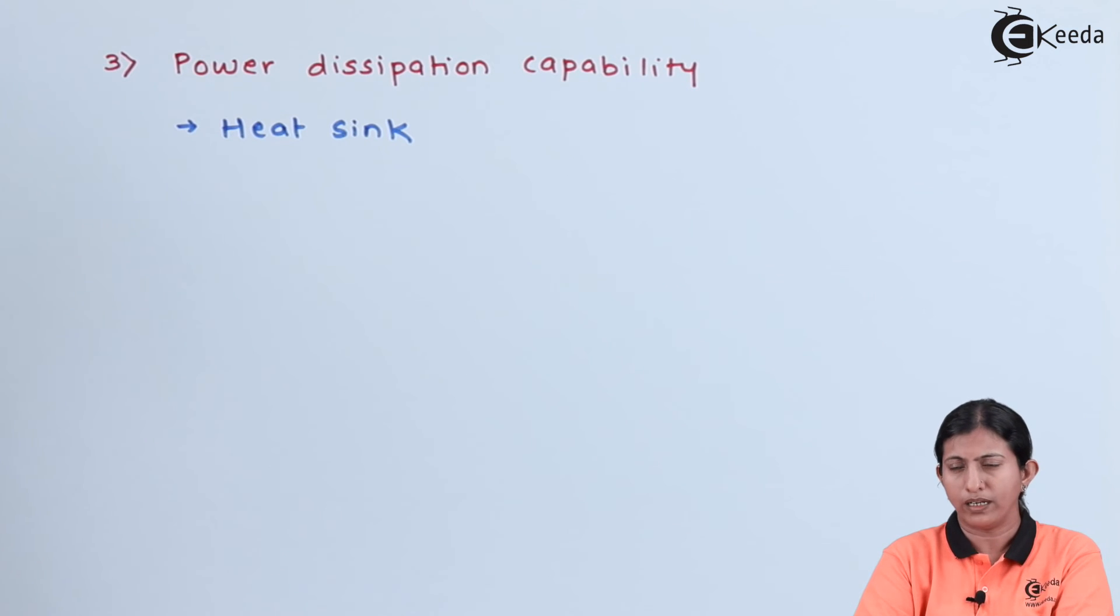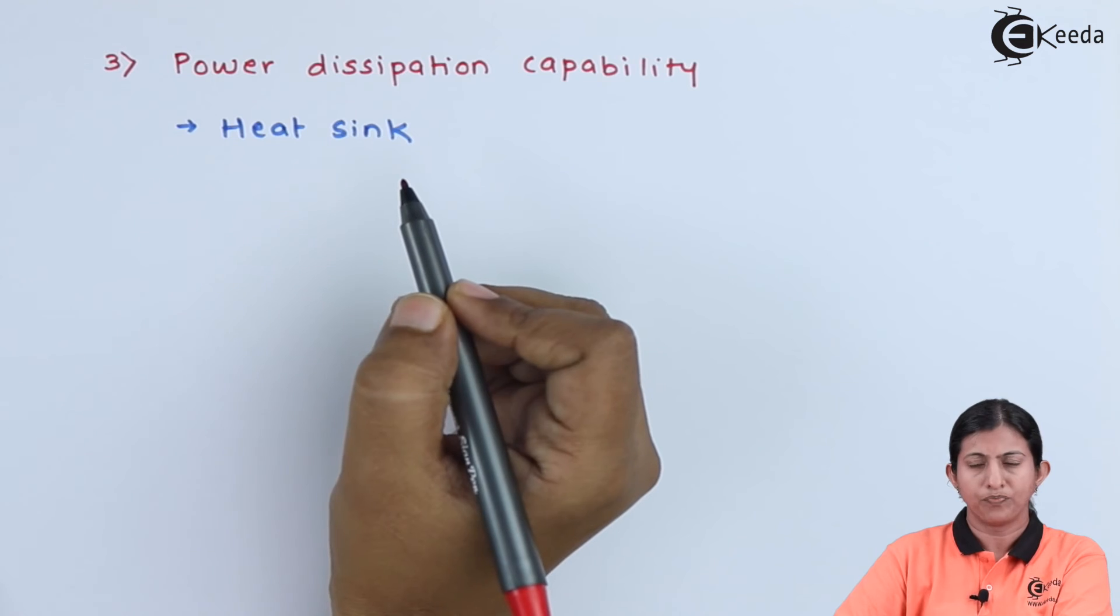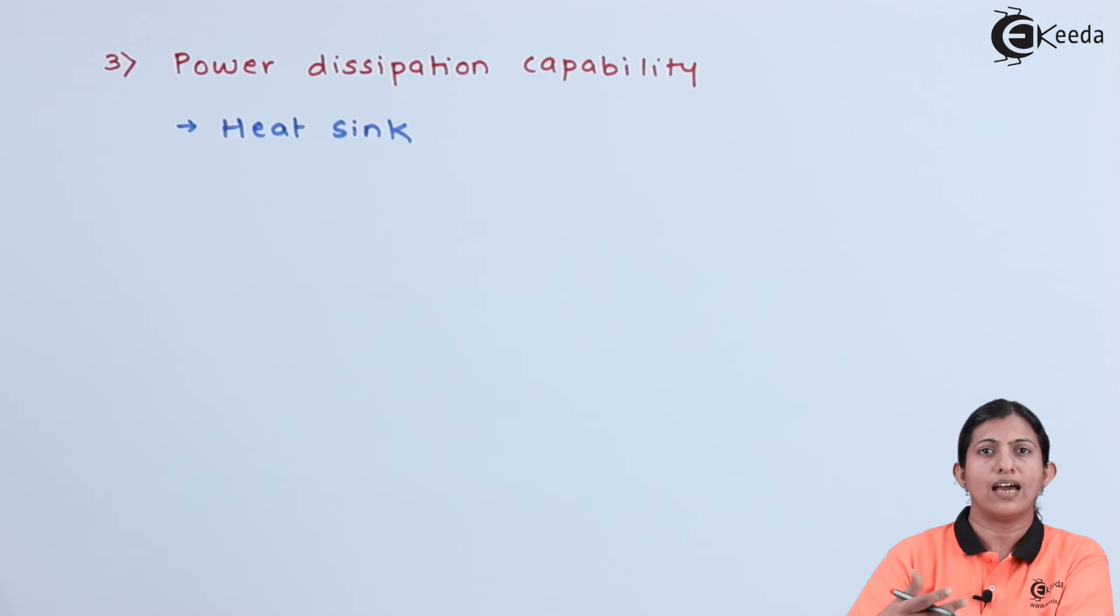The heat sink provides a large area for the heat. Heat will flow from the transistor to the heat sink and from the heat sink into the surrounding space. In this way, we can increase the power dissipation capability of the transistor.